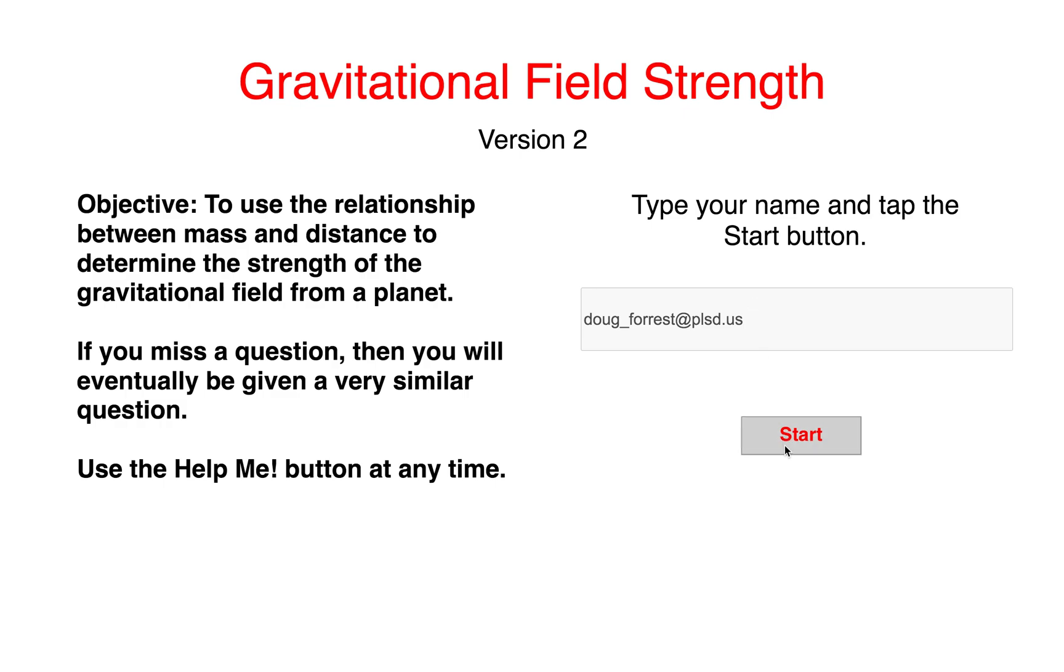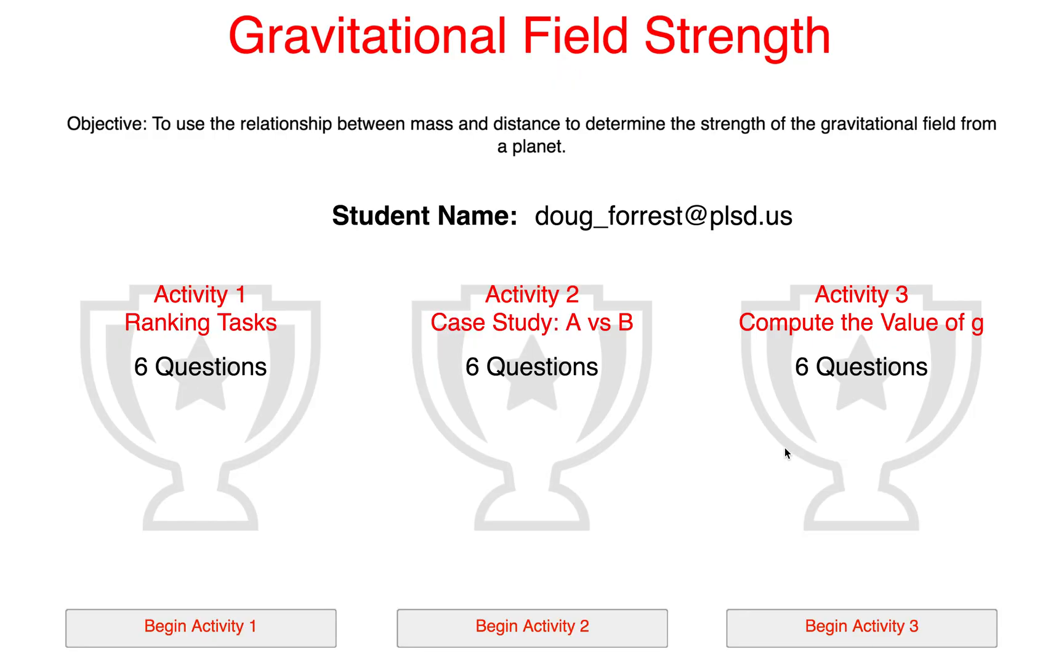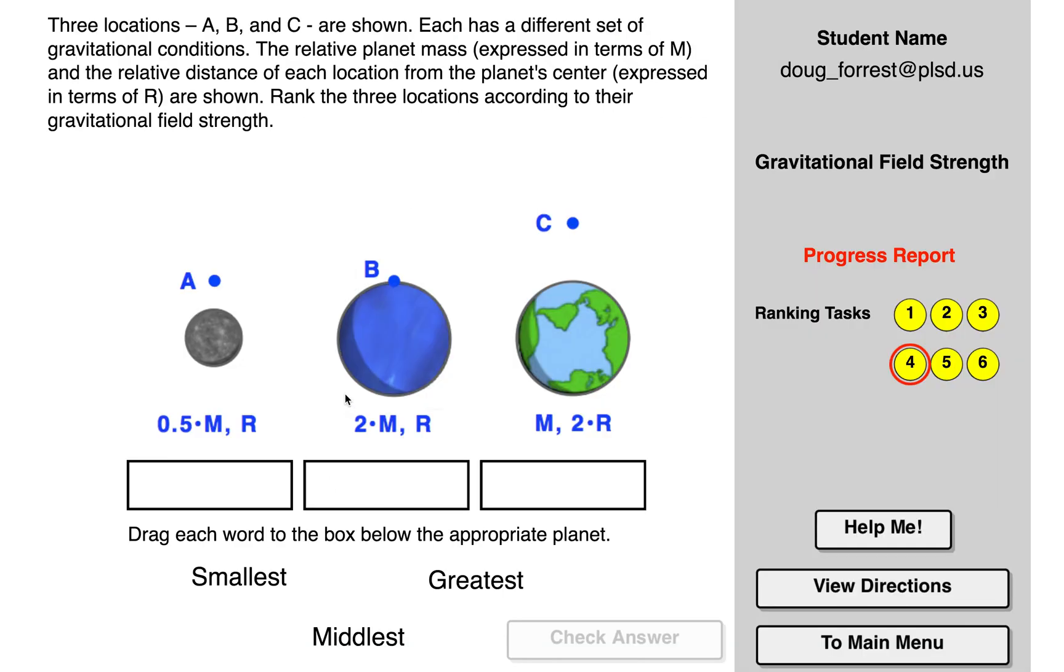Your name should appear there. So Activity 1, ranking tasks—I don't think you've done this one. I think you did the universal gravitation one. So basically we've got conditions A, B, and C. In this case, each has a set of different gravitational conditions. The relative planet mass and relative distance of each unknown planet center are shown.